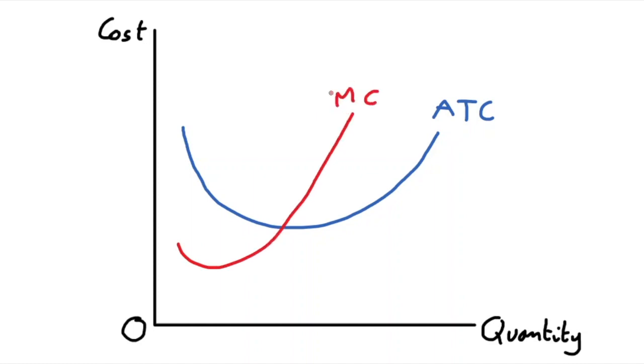In order to show the relationship, we'll start off with a firm producing Q1 quantity of output. At Q1 quantity of output, there's a gap between the average cost of production up here, let's call that 10 euro, and the marginal cost of production, let's call that 5 euro. At a quantity of one, a firm produces its very last unit of output and it costed 5 euro.